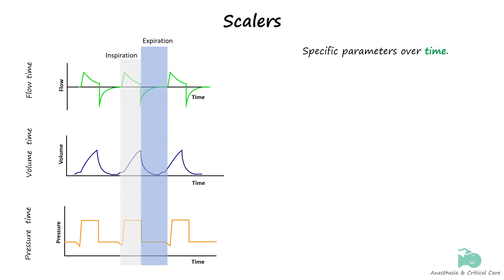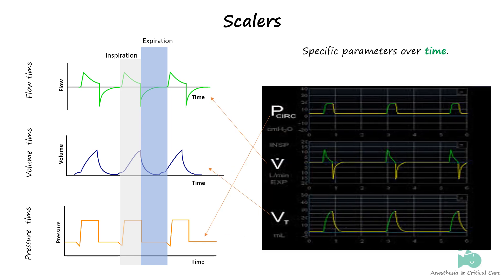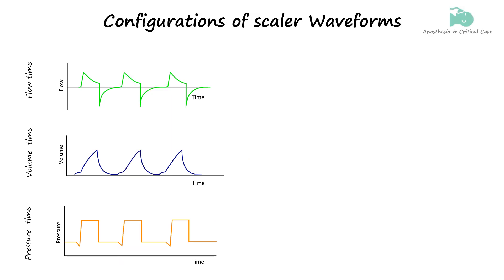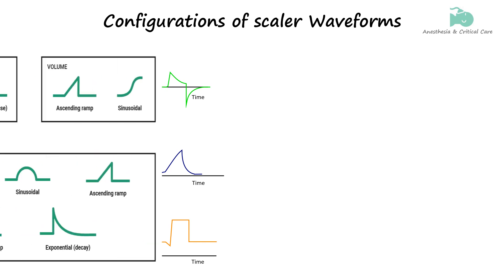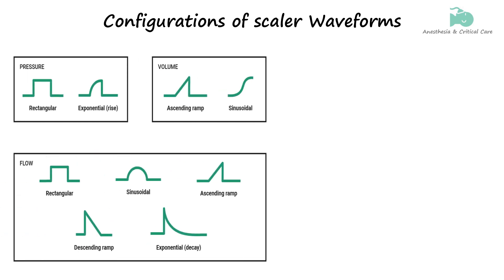Most ventilators have these three scalars displayed on the main screen. Though these waveforms are shown as examples, their shapes can vary depending on the mode of ventilation. During mechanical ventilation, scalar waveforms can appear in one of six basic configurations or shapes. These will be introduced briefly here, with more detail discussed when covering individual scalars.